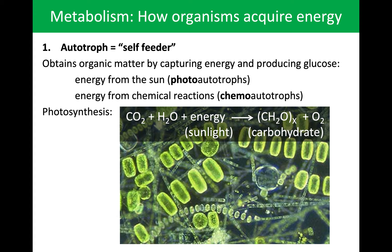The one we'll focus on for this class is photo-autotrophs — the ones that perform photosynthesis. Photosynthesis is the process of converting sunlight, water, and carbon dioxide into carbohydrates and oxygen. This is a very important chemical equation for the exam: CO₂ plus water plus energy in the form of sunlight produces carbohydrates and oxygen. We're building that biomass, growing, and able to reproduce.